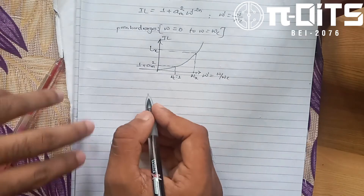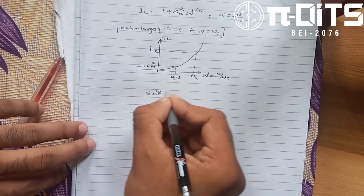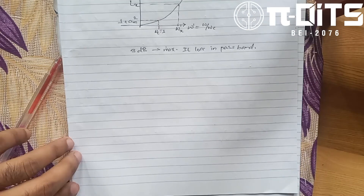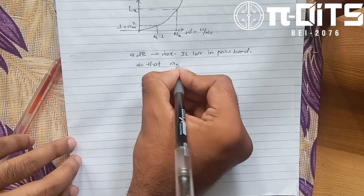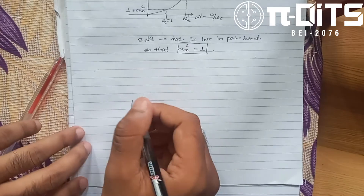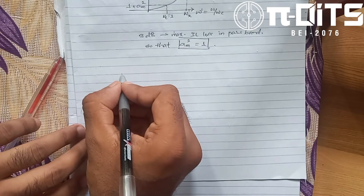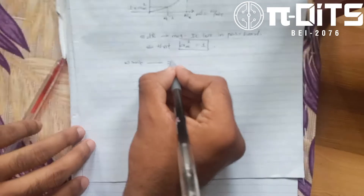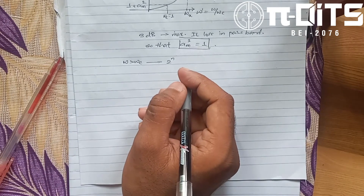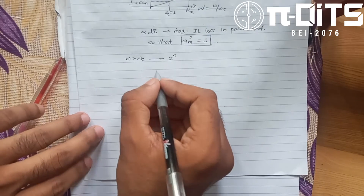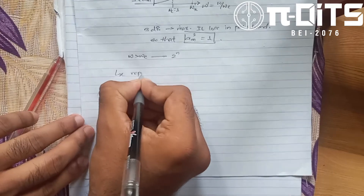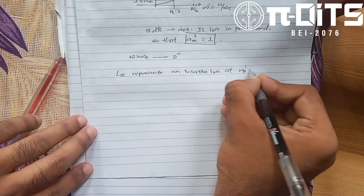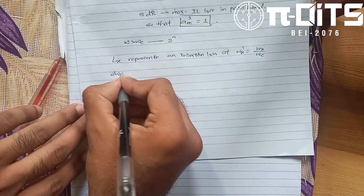The maximum insertion loss in the pass-band is 3dB. The rate of increase of the insertion loss for omega greater than omega-c depends upon the exponent of 2 to the power n, which is related to the number of filter sections used in the filter network with n reactive elements. LX represents insertion loss at omega-x dash equal to omega-x divided by omega-c.